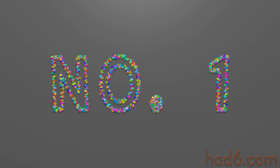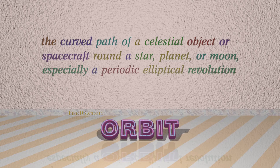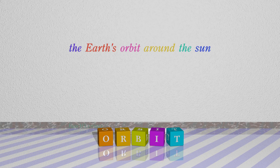Number 1: Orbit. Which means the curved path of a celestial object or spacecraft around a star, planet, or moon, especially a periodic elliptical revolution. For example: The Earth's orbit around the Sun.